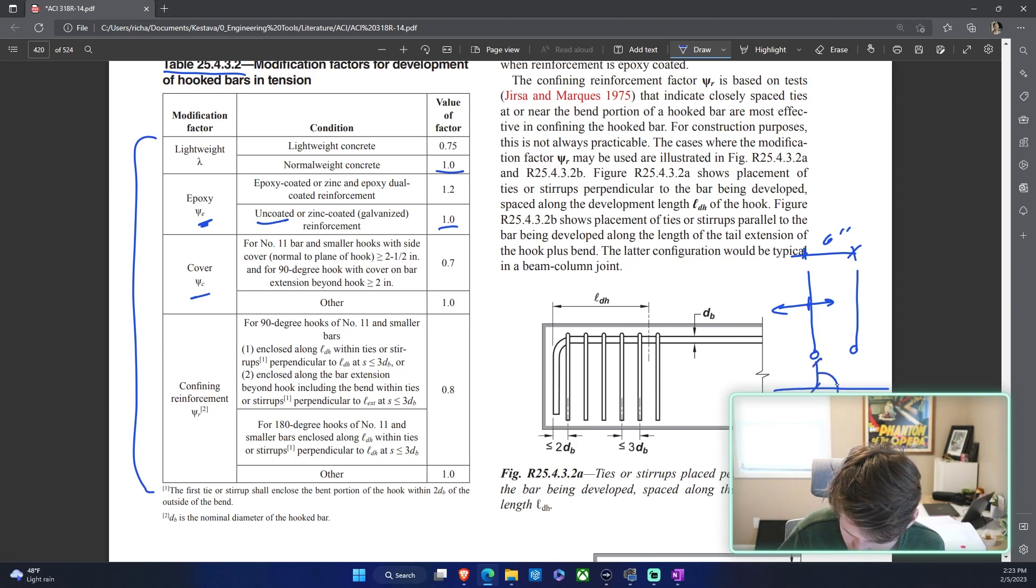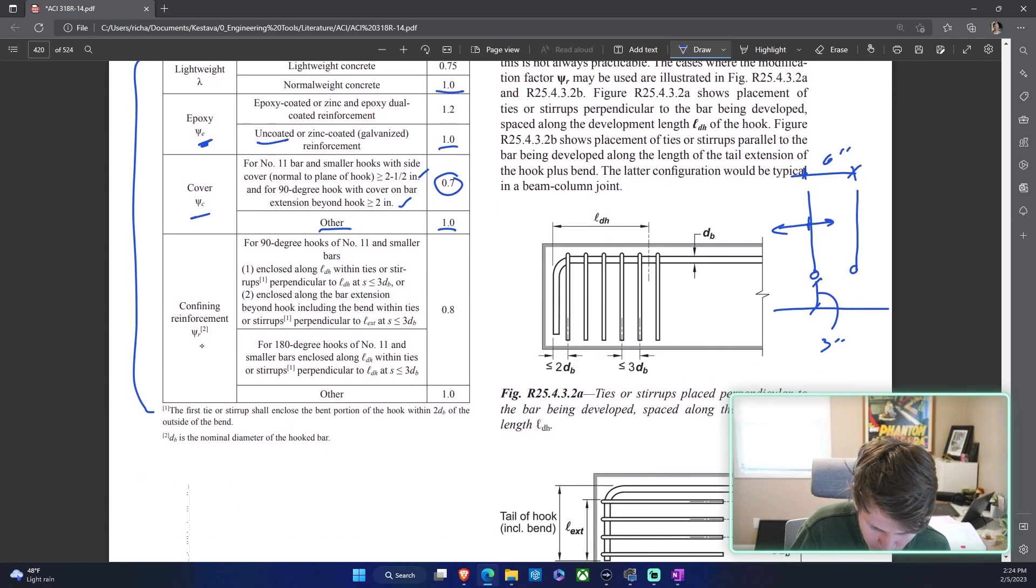We are good there because we're greater than two inches, so both those requirements check out so we can use 0.7. If you wanted to stay conservative and you weren't quite sure, you could just go other and use 1.0, and you'll see that that will add length to your development length.